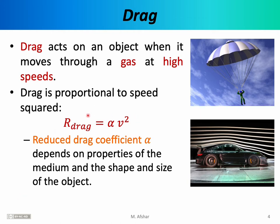As this equation indicates, the resistive force of drag is equal to alpha times v squared, where v is the speed of the moving object. Alpha is known as the reduced drag coefficient — the analog of b in the case of the viscous force — and like that coefficient, alpha depends on properties of the medium and the shape and size of the object. If we're talking about a parachute, the reduced drag coefficient is quite large, because a parachute is designed to maximize drag or air resistance.